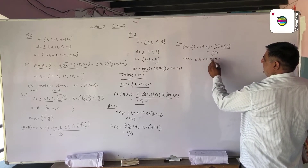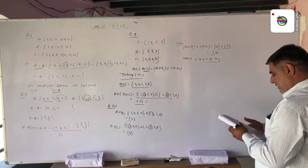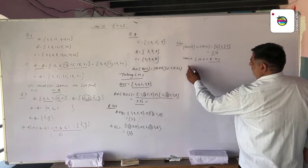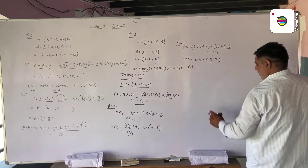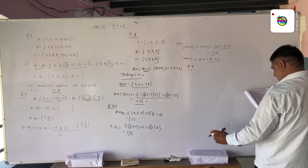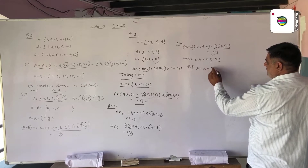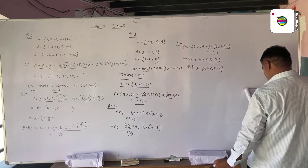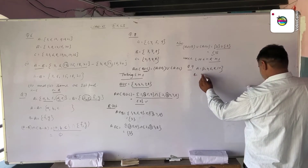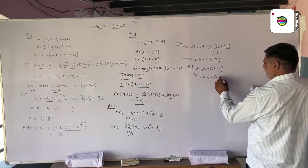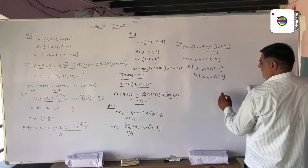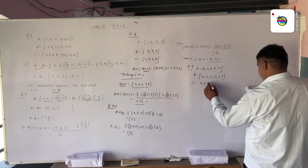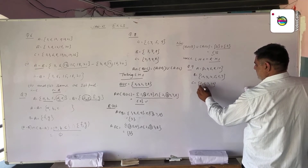This is question number 8. Now in question number 9, set A is given by 2, 4, 6, 8, 10 and set B is 1, 2, 3, 4, 5, 6, 7. Set C is given by 2, 4, 5, 6, 7, 10.